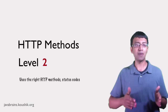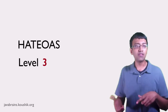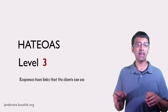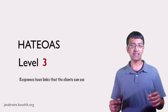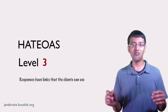Finally, level three is when you implement HATEOAS — that is, the responses have links that control the application state for the client. The client doesn't have to be aware of the different API URIs; all the URIs the client would need are sent to them in the response. An API that implements this is considered to be at level three of the Richardson Maturity Model and is sort of considered to be fully RESTful.